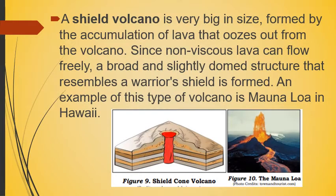A shield volcano is very big in size, formed by the accumulation of lava that oozes out from the volcano. Since non-viscous lava can flow freely, a broad and slightly domed structure that resembles a warrior's shield is formed. An example of this type of volcano is Mauna Loa in Hawaii.